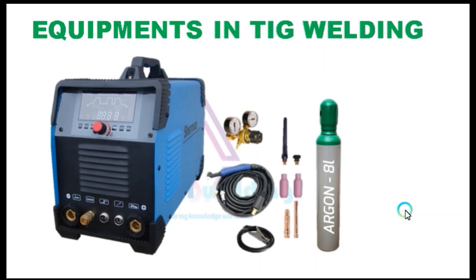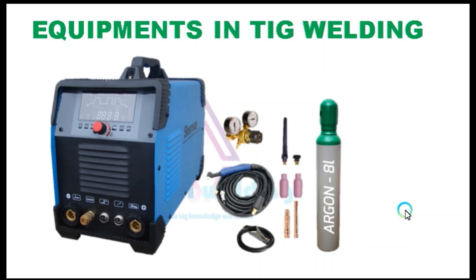Let's now understand the equipment in TIG welding. First is the power source, which is the most important part. Gas tungsten arc welding uses a constant current power source, meaning that the current and thus the heat remains relatively constant even if the arc distance and voltage change. This is important because most applications of TIG are manual or semi-automatic, requiring that an operator hold the torch. Maintaining a steady arc distance is difficult if a constant voltage power source is used instead, since it can cause dramatic heat variations and make welding more difficult.